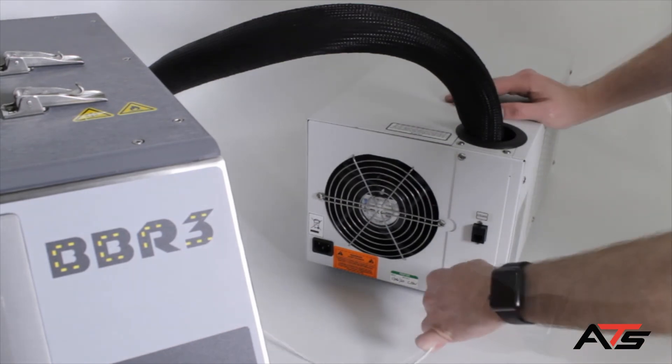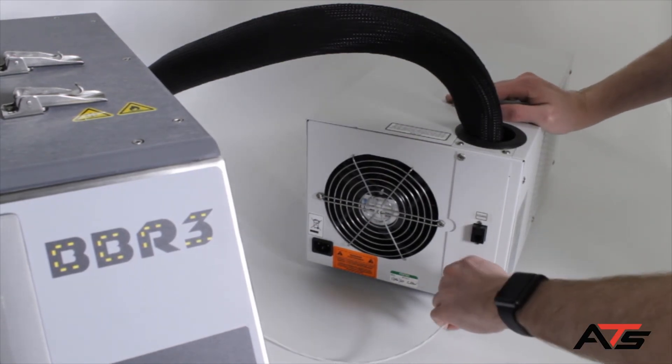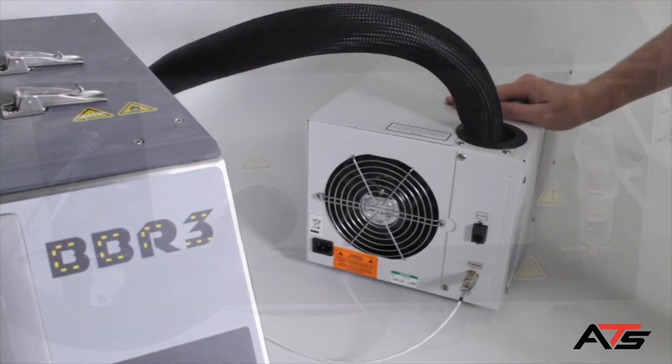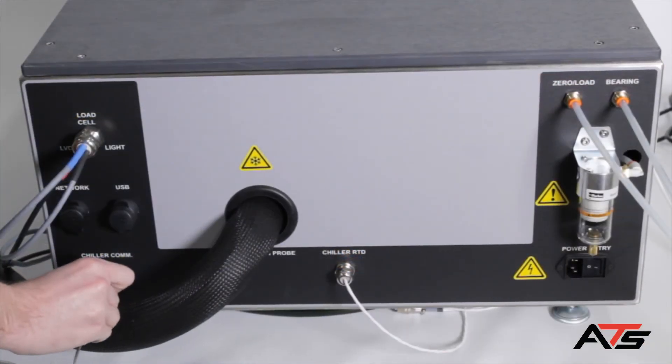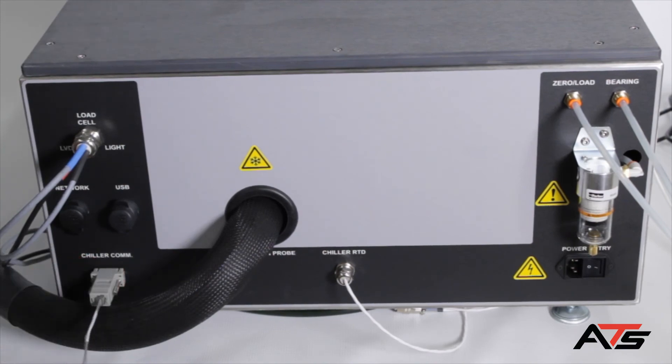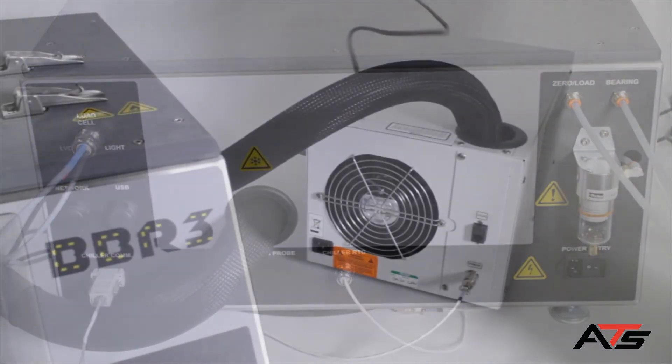Connect the chiller RTD cable from the rear of the base unit to the refrigeration unit. Connect the chiller communication cable between the chiller communication port on the rear of the BBR and the RS-485 port on the rear of the chiller.